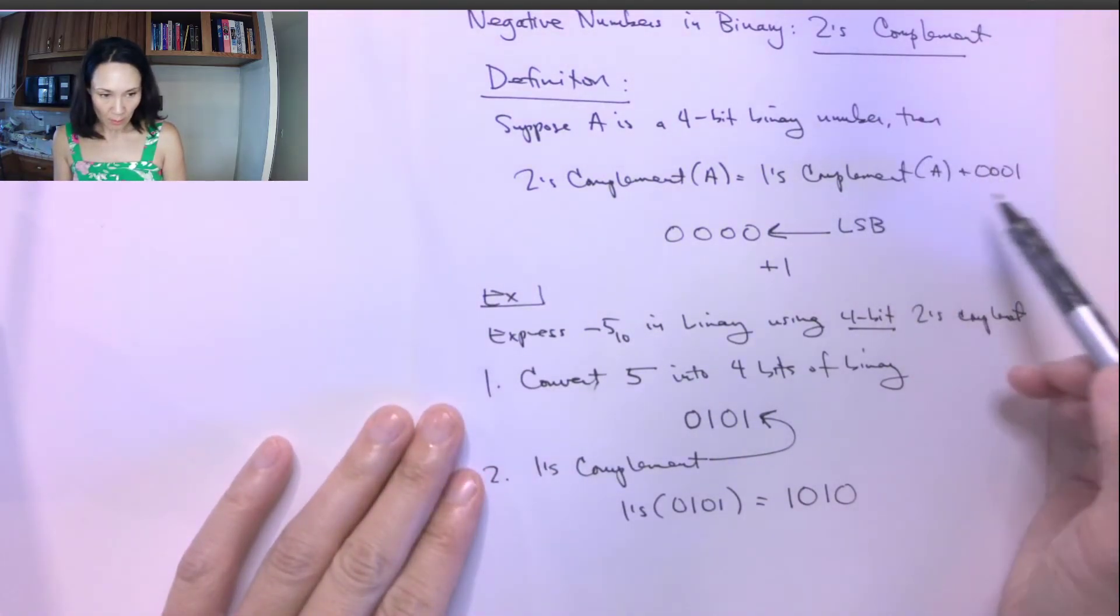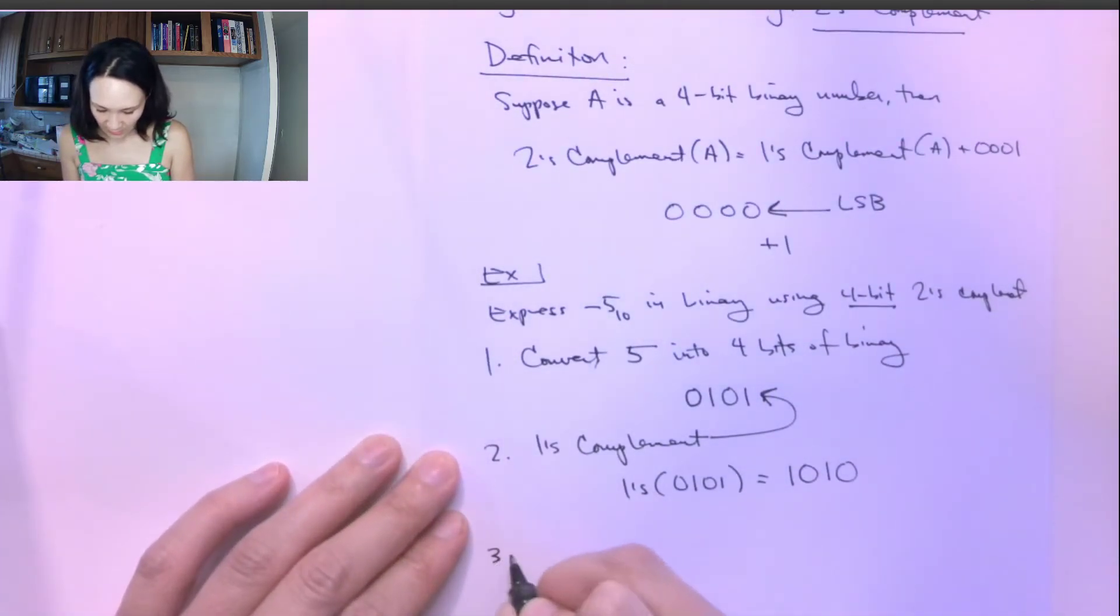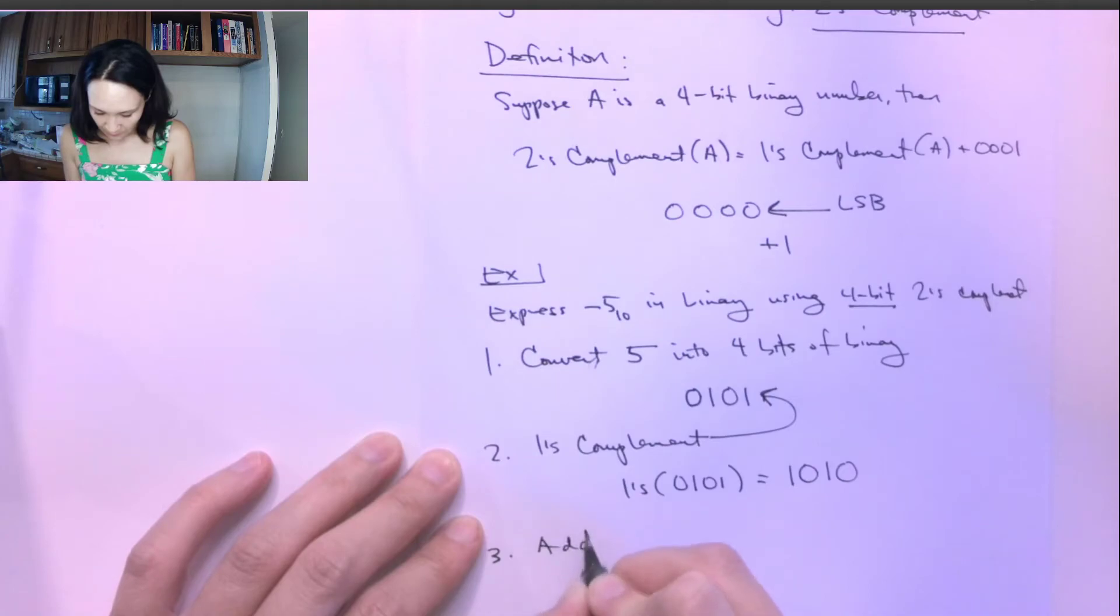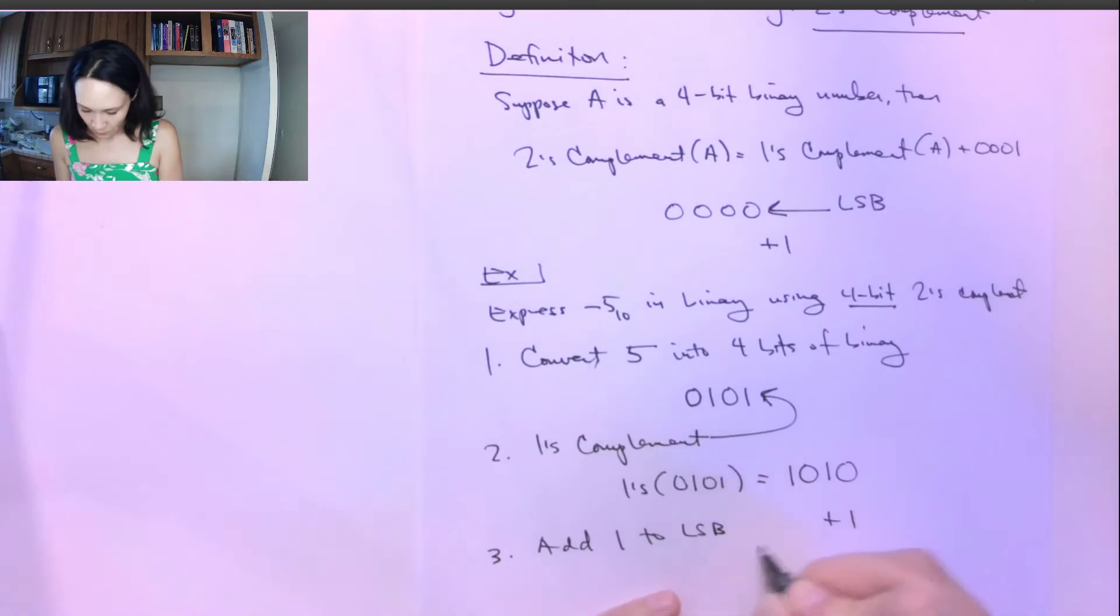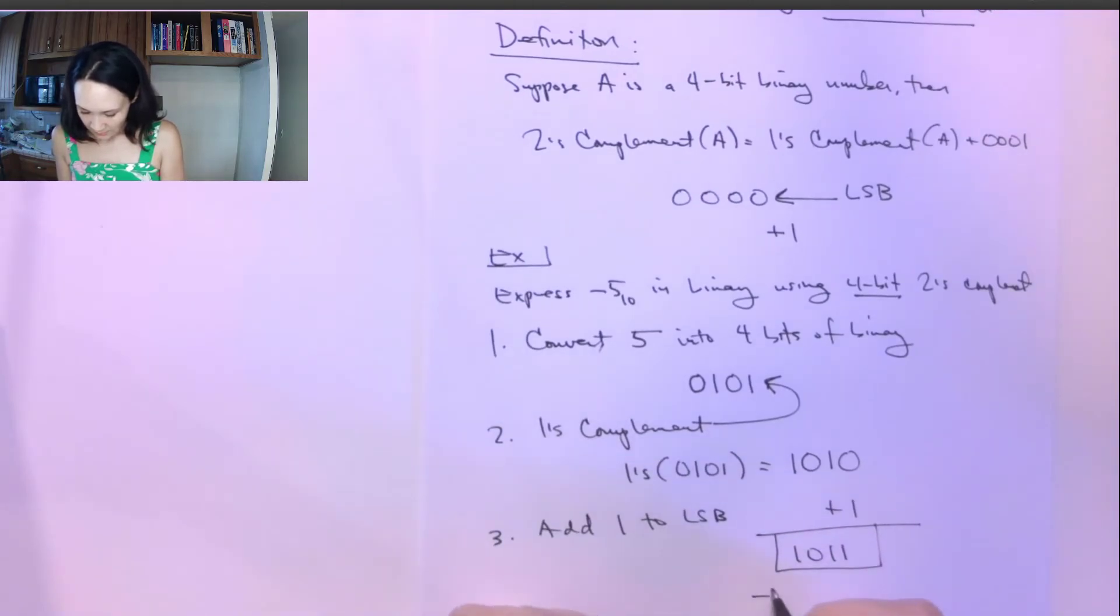So now we're ready for our plus one step. We're just going to add one to the least significant bit. Add one to least significant bit. So plus one, that gives us 1, 0, 1, 1. And this here is negative 5 in two's complement 4-bit convention or form.